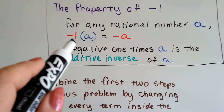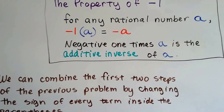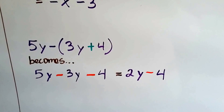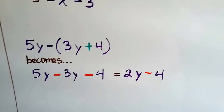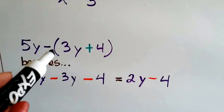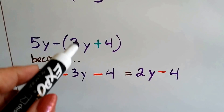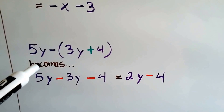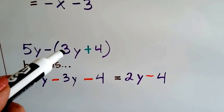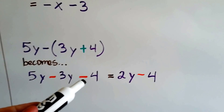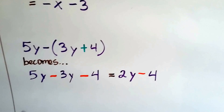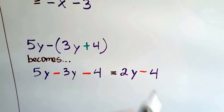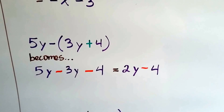When we have a negative sign in front of parentheses, it's like a negative 1 times what's inside. Let's try this one: we've got 5y minus, and then 3y plus 4 in parentheses. We distribute a negative 1 from this negative sign to each term inside — positive 3y becomes negative 3y, and positive 4 becomes negative 4. Now we combine like terms: 5y take away 3y is 2y, and we throw on our minus 4. Isn't that much easier?